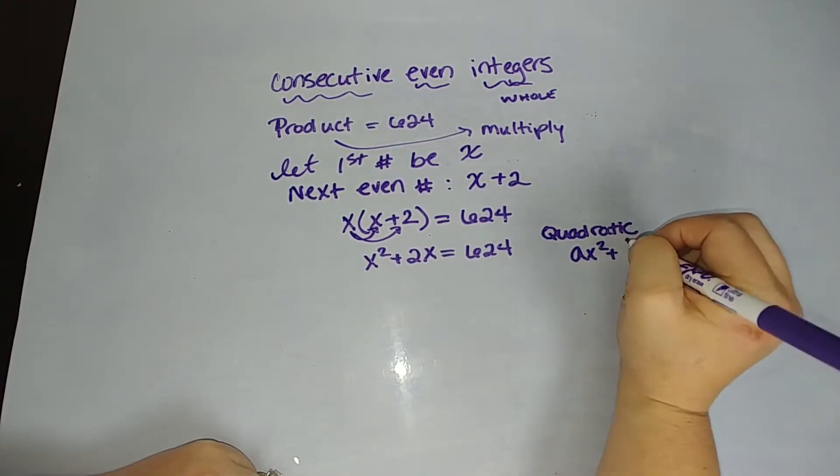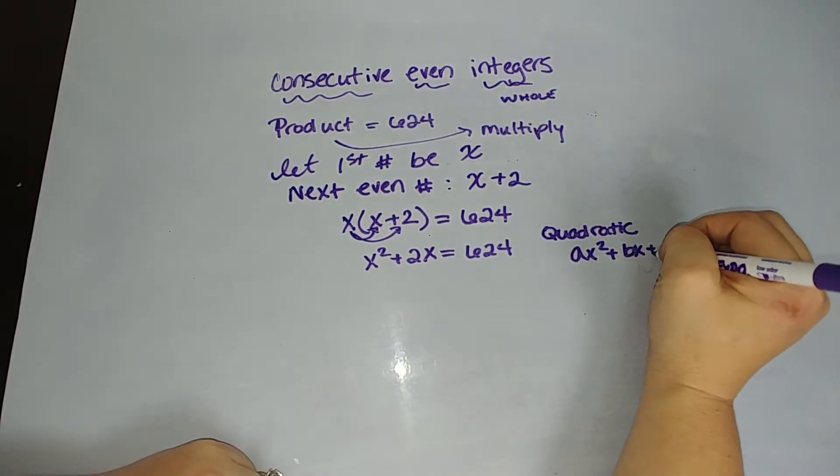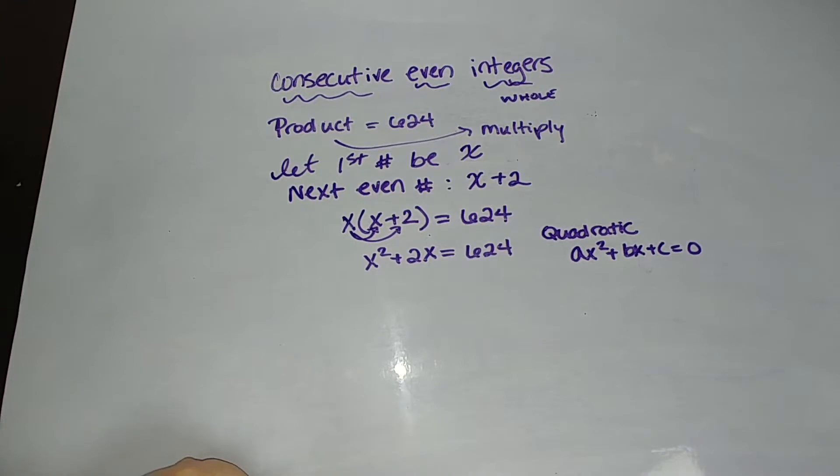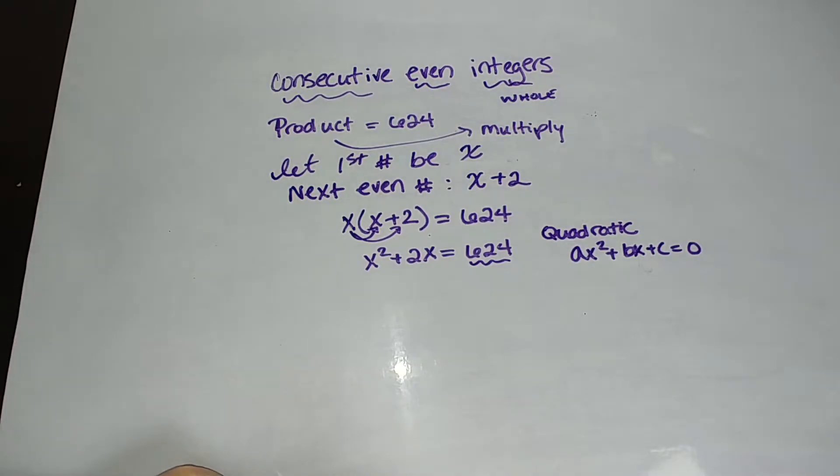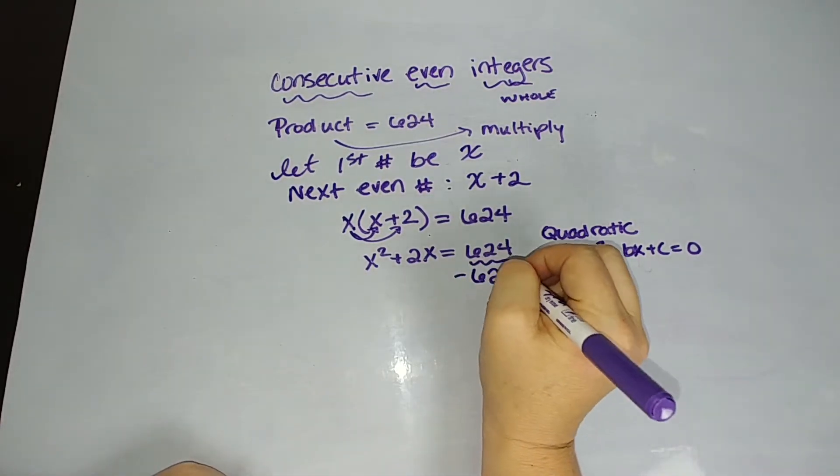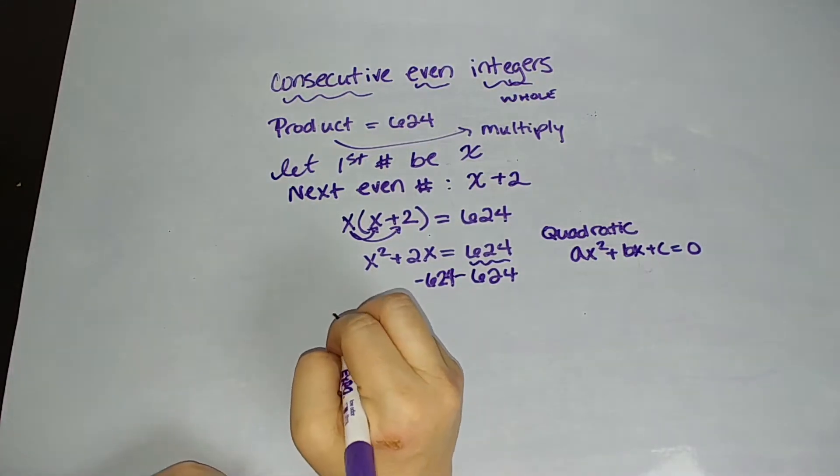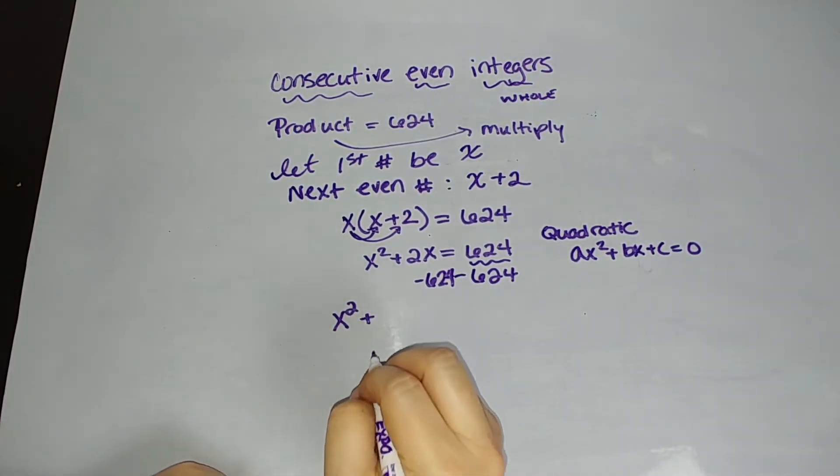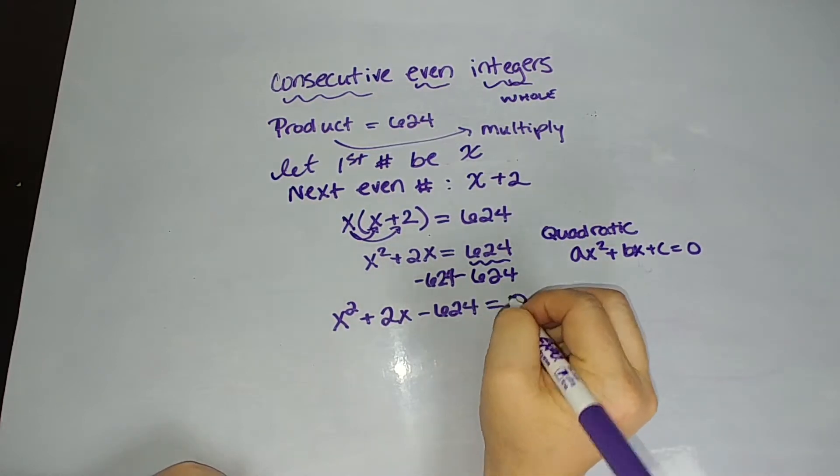Quadratic skills, ax squared plus bx plus c equals 0. Okay, so that's pretty important that you have to know standard form is 0 because right now this thing equals 624. If I don't want it to equal 624, I want it to equal 0, I need to take away 624. So subtract 624. So this thing looks like something we're used to. So x squared plus 2x minus 624 equals 0.